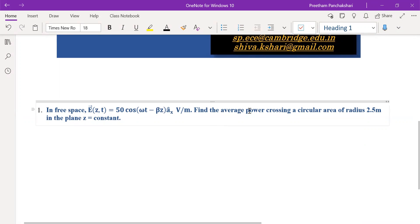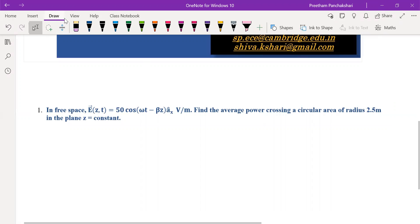It is required to find the average power crossing a circular area of radius 2.5 meters. The plane z is equal to constant. That means the plane is perpendicular to z axis. It is a circular plane.